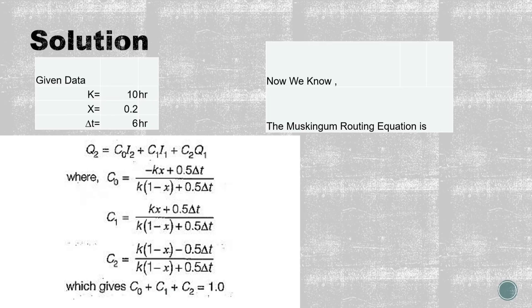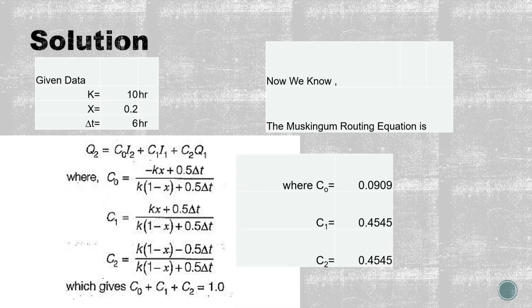Now calculating the values of C0, C1, and C2, we will get C0 as 0.0909, C1 as 0.4545, and C2 as 0.4545 respectively.